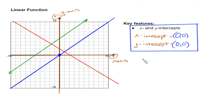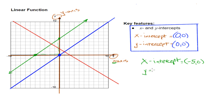For the x-intercept of my green line, I first look for my x-axis and go over until I touch. That is at negative 5. So the x-intercept is negative 5, comma, 0. Now let's go to the y-axis. I come down and I'm right here — that is at positive 5. So my y-intercept equals 0, comma, 5.